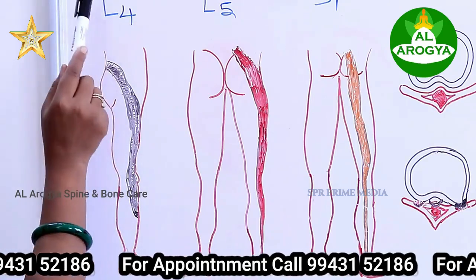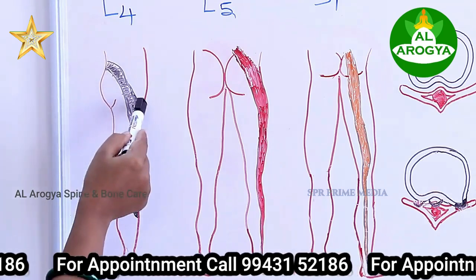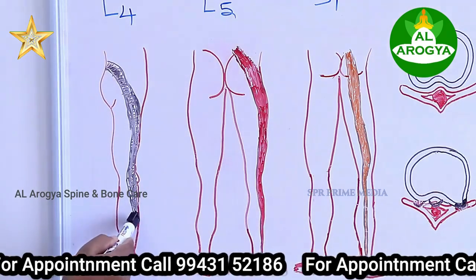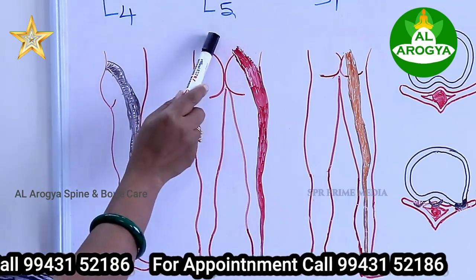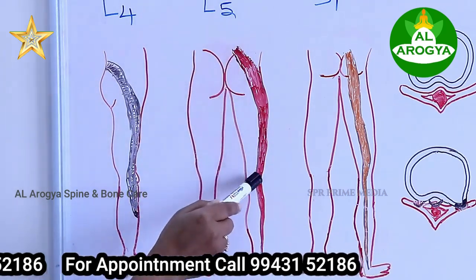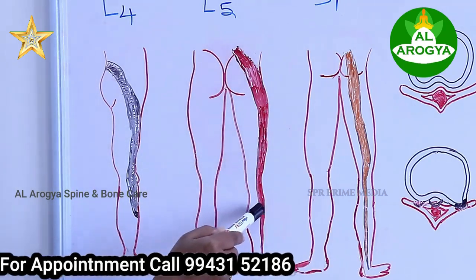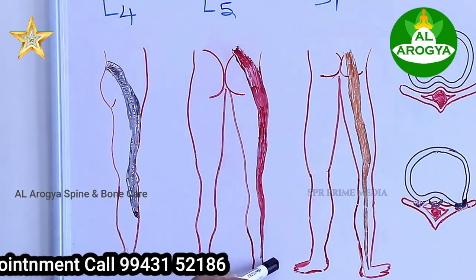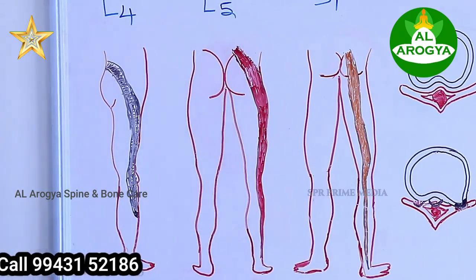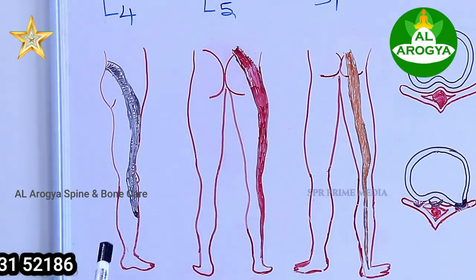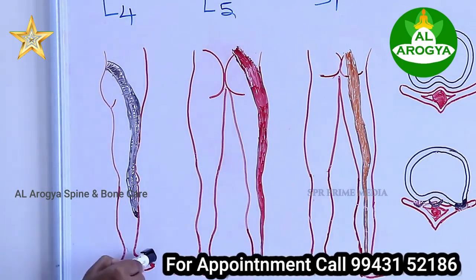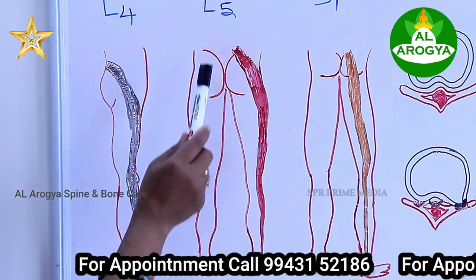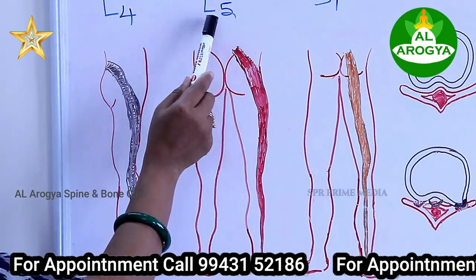You can see the L4, L5, and S1 nerve roots. The L5 S1 root is identified. If you look at it on the side, L4 is identified. If you look at it on the other side, L5 is identified.